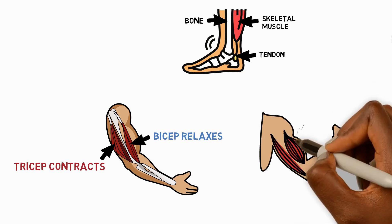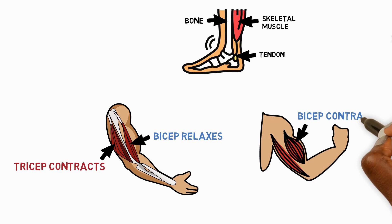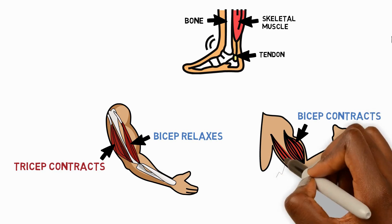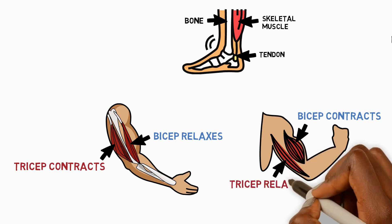When you want to bend your arm towards your body, your bicep muscle contracts and pulls on the bone, whilst the tricep relaxes this time, returning to its normal size.